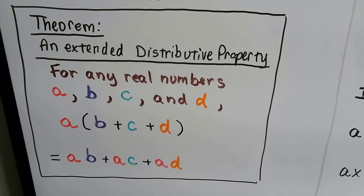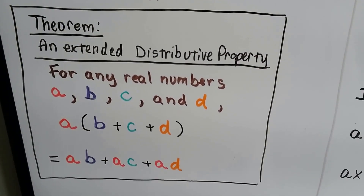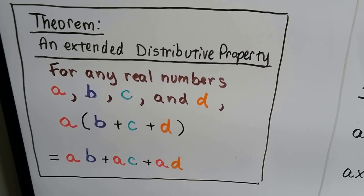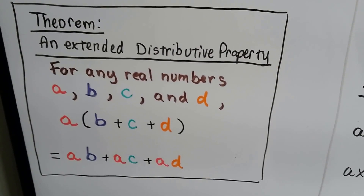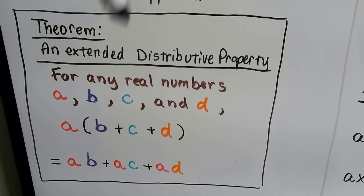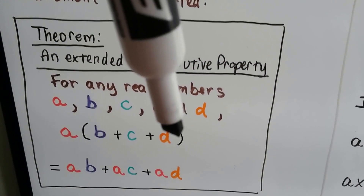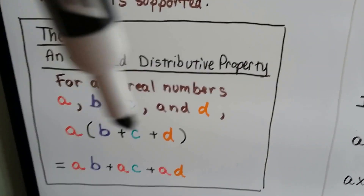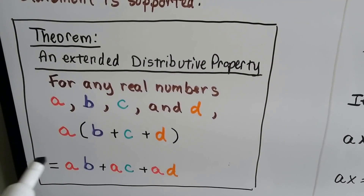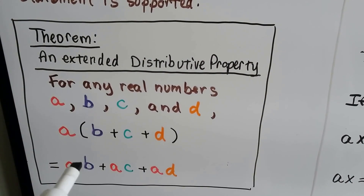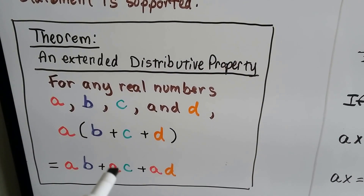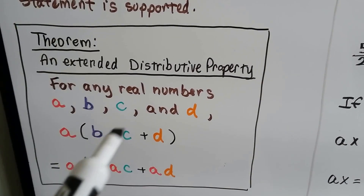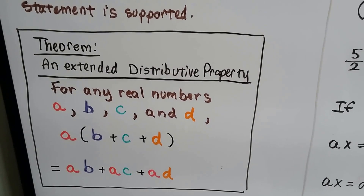Here's our first theorem — the extended distributive property. It says for any real numbers a, b, c, and d, we can distribute the a to everything inside the parentheses. We could even have plus e plus f plus g inside. It's going to equal a times b plus a times c plus a times d. We distribute the a to each one inside the parentheses.